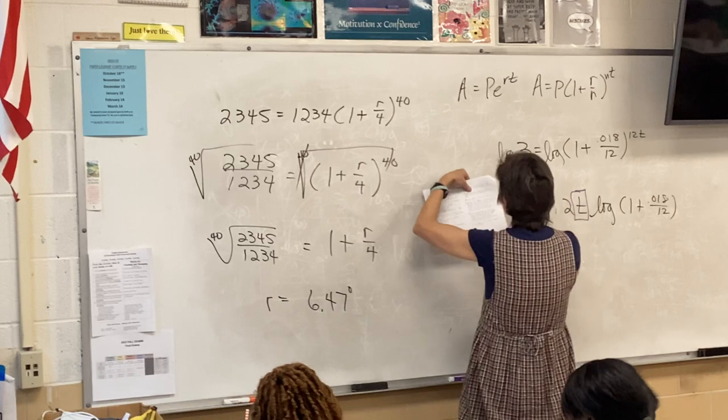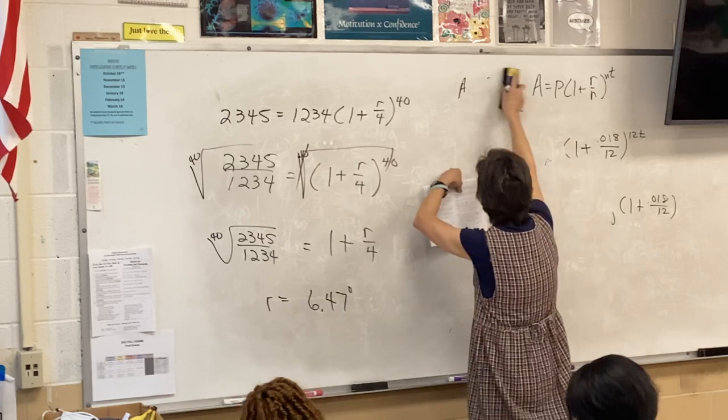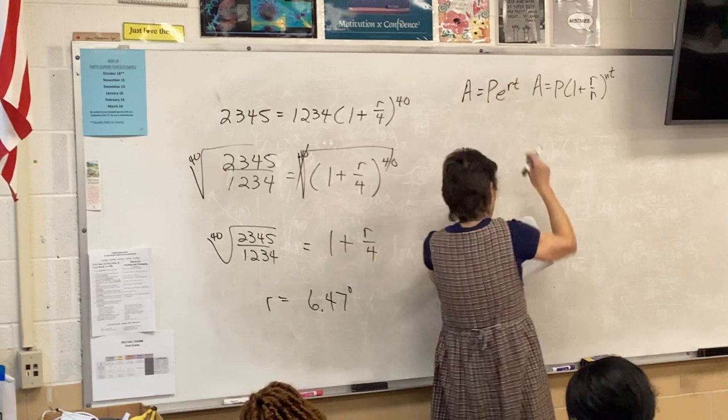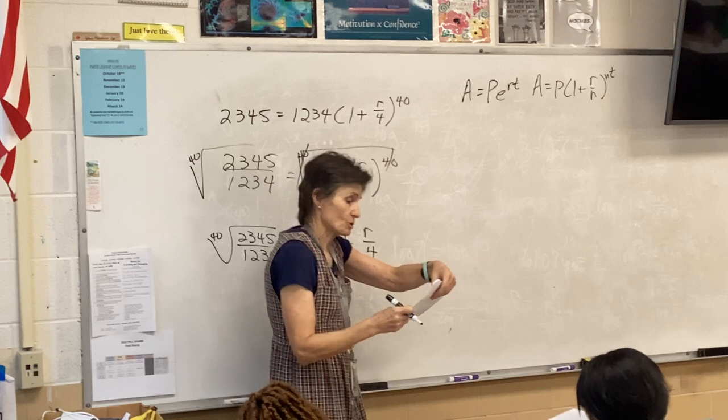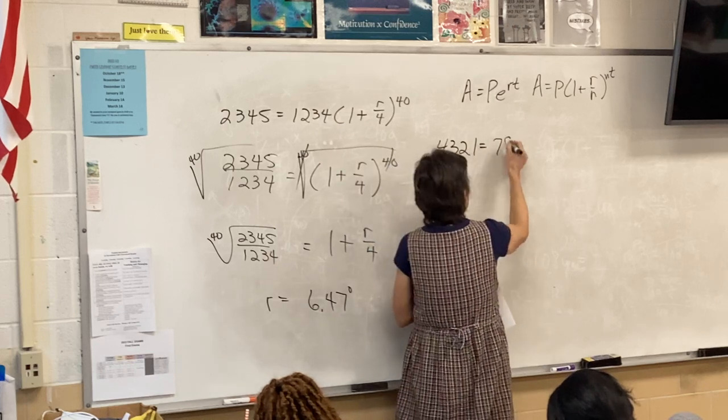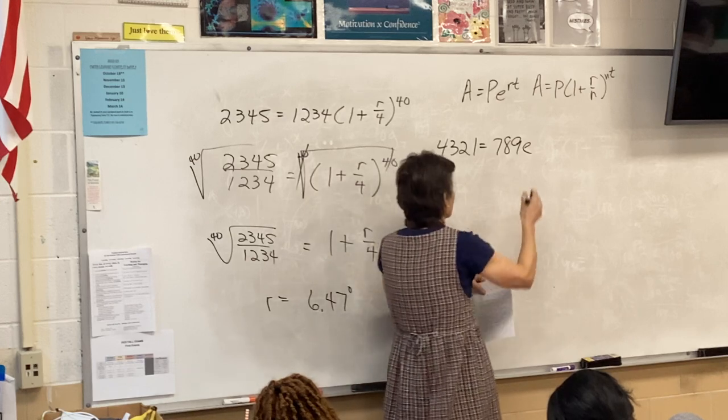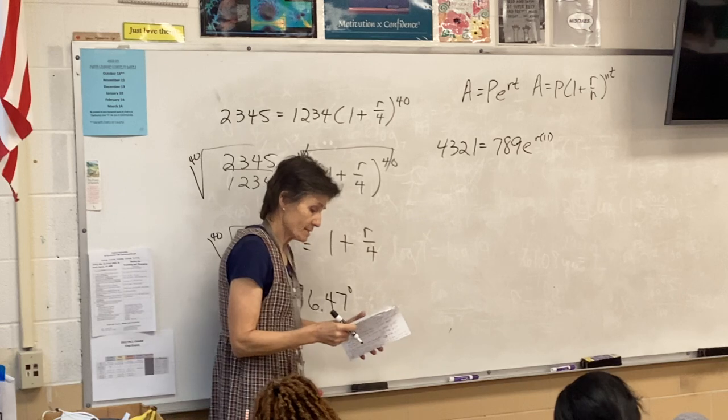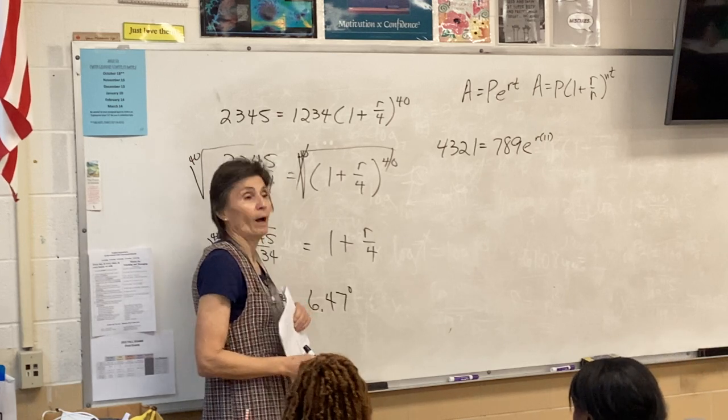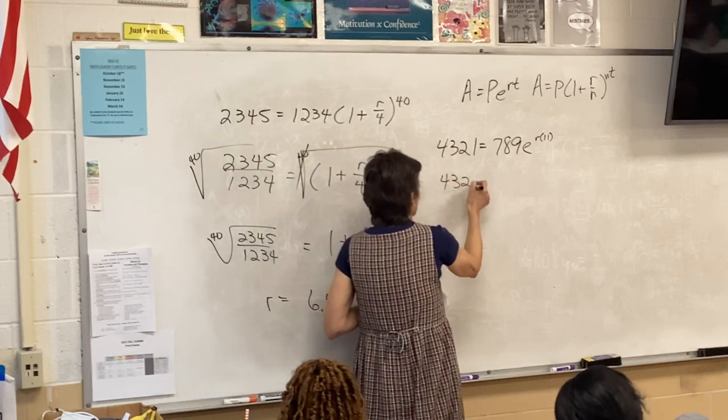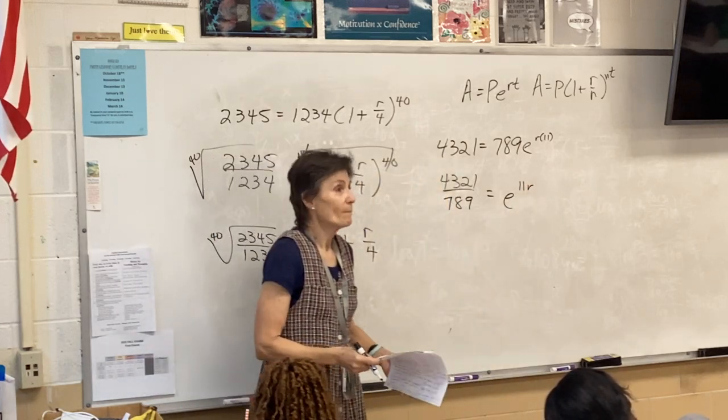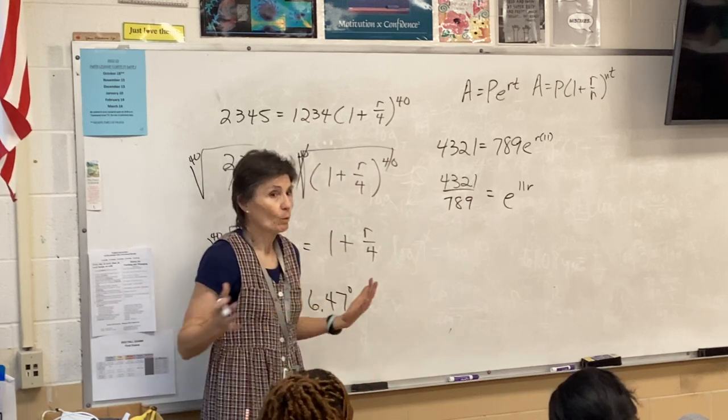Number 8. What is the rate of growth for a strain of bacteria that goes from 789 to 4321 in 11 hours? Which formula? PERK. It's not money. It's going to be PERK. So I have 4321 equals 789 times e to the R times 11. Does that make sense to everybody?